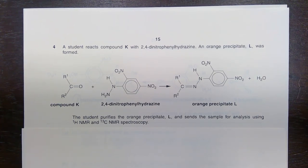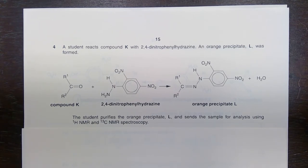Today we're going to look at question four from the A-level paper that was sat in June 2015 for the OCR board, a question regarded by many as one of the most difficult A-level chemistry questions yet asked. So let's take a look.